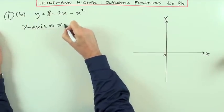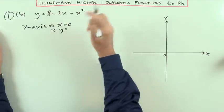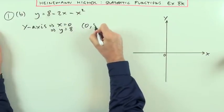Where does it cut the axis? The y-axis, first of all, that means x is 0, and if x is 0, straight away the x-terms disappear and you're left with 8, so it cuts at 0, 8.